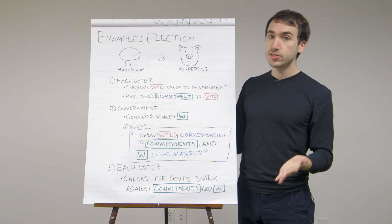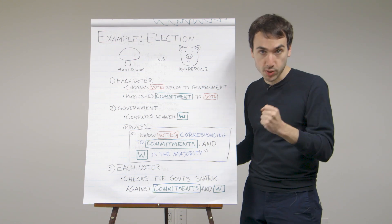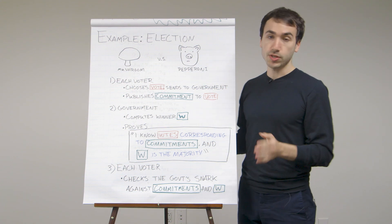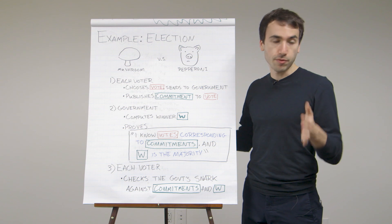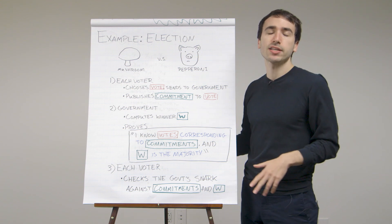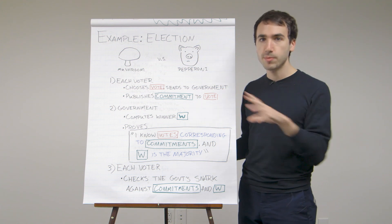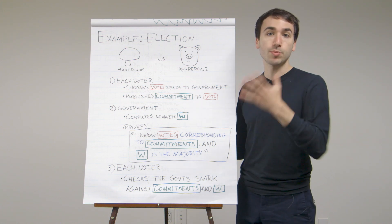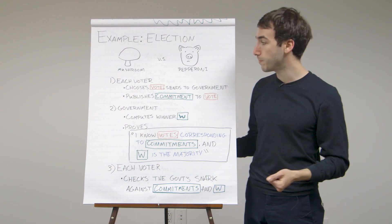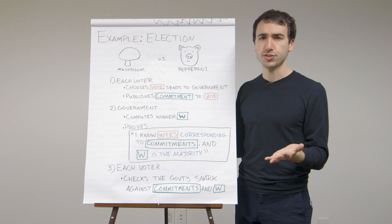Moreover, because this is a very sensitive election, everyone wants to keep their votes as secret as possible. But there's one person that everyone trusts — we'll call her Alice — and Alice is going to act as the government for this election. She's going to collect all the votes, tally them, and then somehow produce a proof for everyone that she actually ran the election correctly and counted the votes correctly.